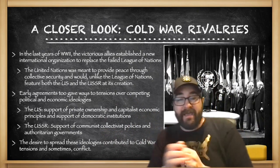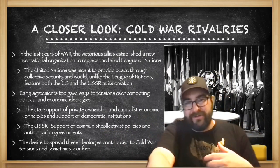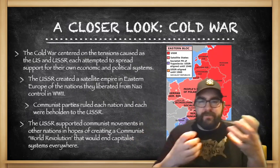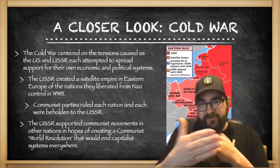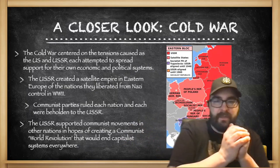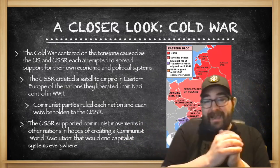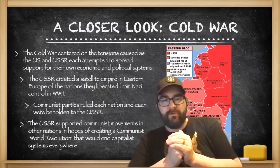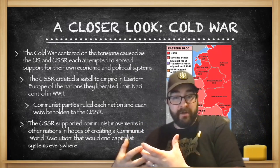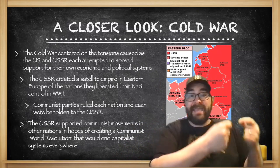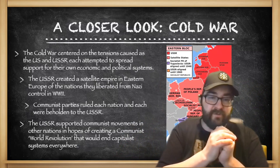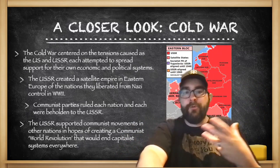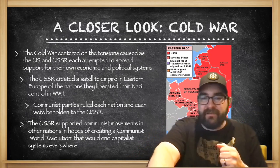The desire to spread these ideologies will contribute to Cold War tensions and, at times, conflicts. The Cold War centers on tensions caused as the United States and the Soviet Union each attempt to spread their own economic and political systems. The Soviet Union is going to create a satellite empire in Eastern Europe from the nations they liberated from Nazi control in World War II, orchestrating communist parties to become the sole governing institutions in each of these states, all beholden to the Soviet Union. The Soviet Union also supported communist movements in other nations around the world, hoping to create a world revolution that would end capitalist systems everywhere.